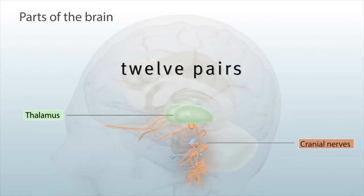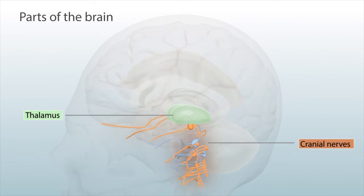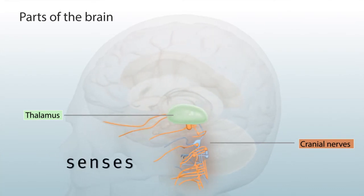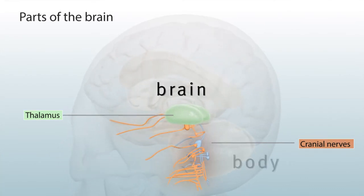Twelve pairs of cranial nerves carry information from your senses to and from the brain and body.